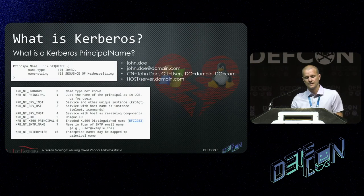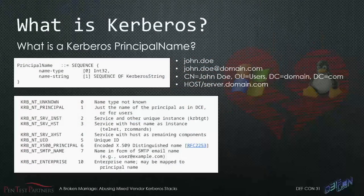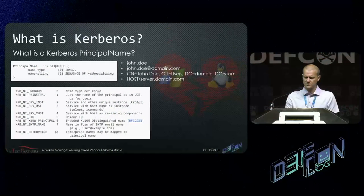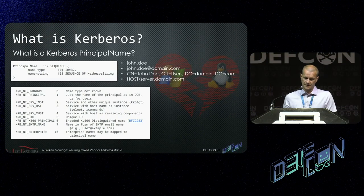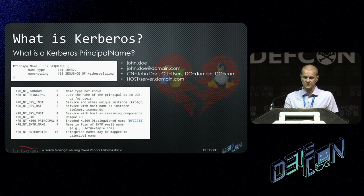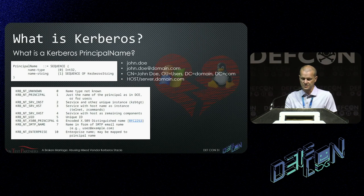What does a principal name look like? It's made of your typical name string — that would be the SAM account name, so john.doe — or it could be a user principal name, which is typically in the form of an email address. Even an LDAP distinguished name is a valid principal name. And of course, there are service principal names for computer accounts or service accounts. There's also the name type, which is a hint to the Kerberos authentication scheme so the KDC has an idea of what sort of principal it is. The most common for users is the NT principal type.